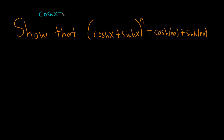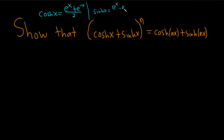The hyperbolic cosine of x is equal to the average of e to the x and e to the negative x — that's the definition. And then the hyperbolic sine of x is half the difference of e to the x and e to the negative x. You take the difference and then you halve it.